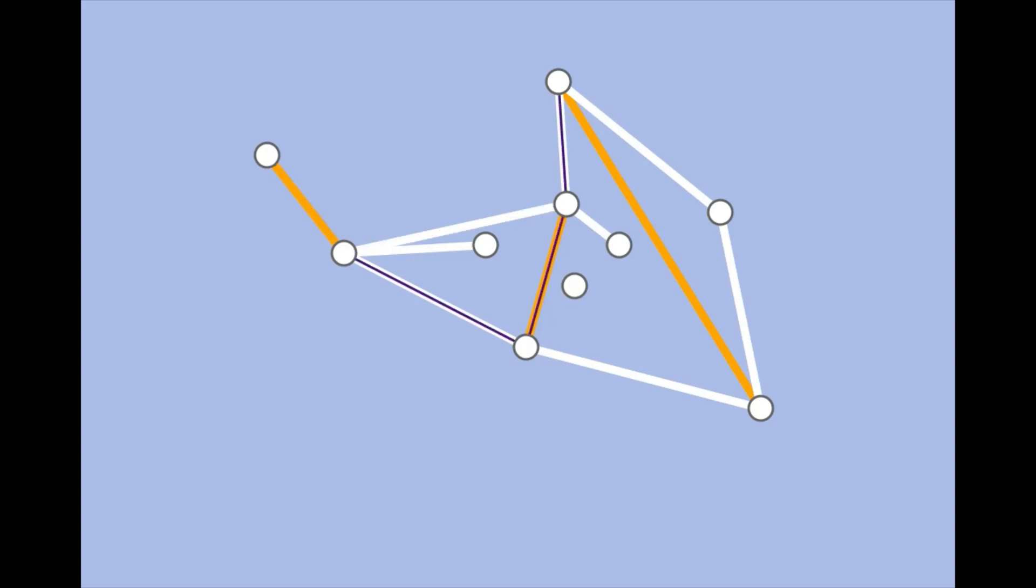This is another alternating path. It goes unmatched, matched, unmatched, matched. It doesn't matter if you start with a matched or an unmatched edge, and it doesn't matter how long the path is.